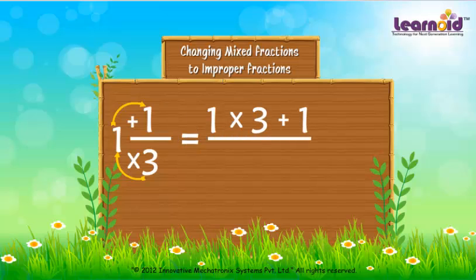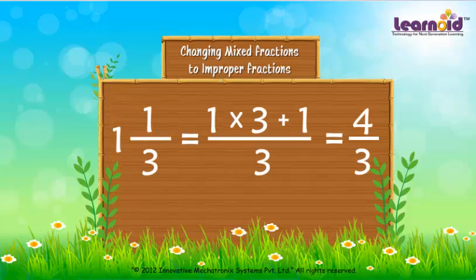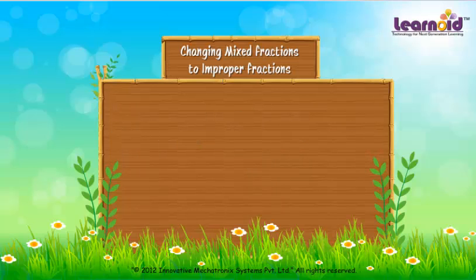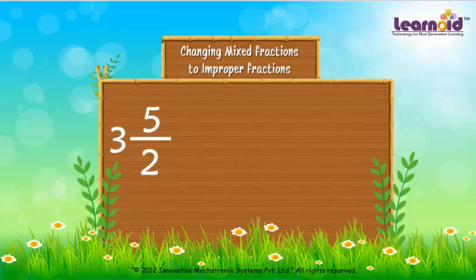3 will remain in the denominator. 3 into 1 plus 1 gives 4 by 3. The Improper Fraction of 1 and 1 by 3 is 4 by 3.